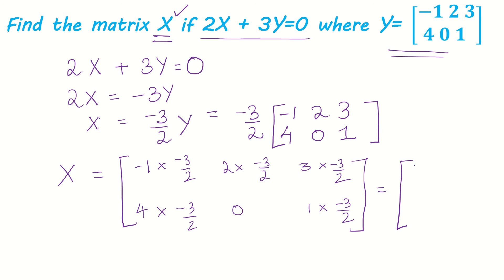This gives us 3 by 2, minus 3, minus 9 by 2, minus 6, 0, minus 3 by 2. This is what X is.